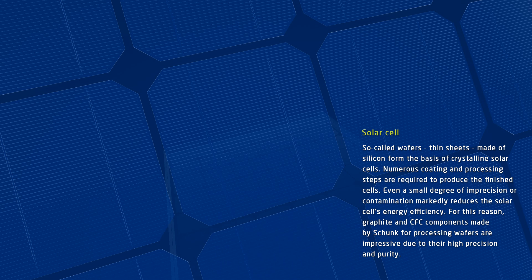The production of solar cells is complex because even a small degree of imprecision or contamination markedly reduces the solar cell's energy efficiency. For this reason, precision and purity play a critical role in the entire process. Graphite and CFC components made by Schunk for processing wafers meet these requirements perfectly.